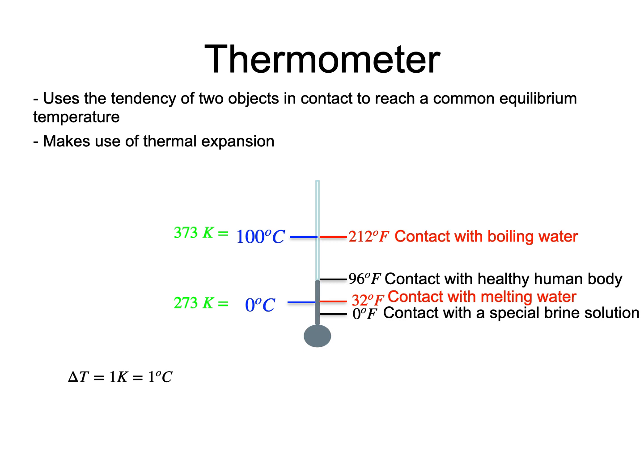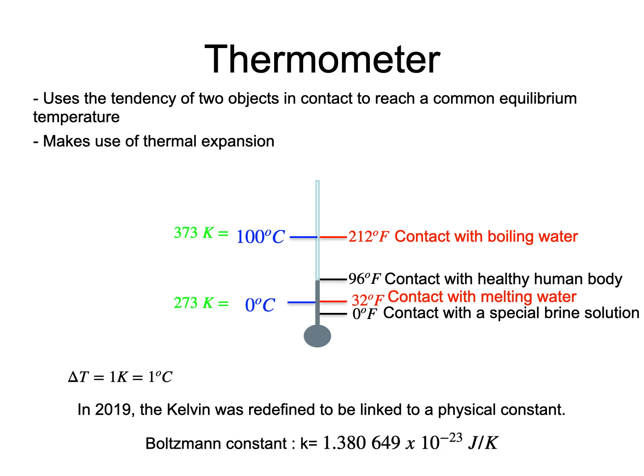To end this saga of the temperature scales, I want to add that in 2019, the unit of measurement of temperature, the Kelvin, has been linked to a physical constant just like the meter, the second, and the kilogram had been. The physical constant in question is the Boltzmann constant. You can see from the measurement units of this constant, which are joules per Kelvin, that this constant is involved in a relationship between energy and temperature.